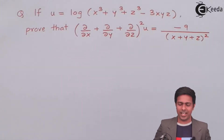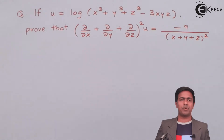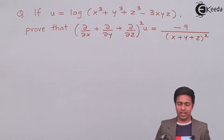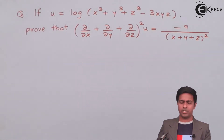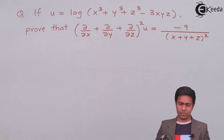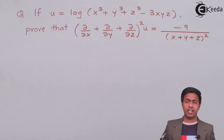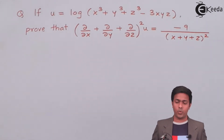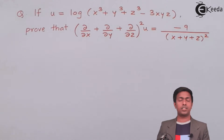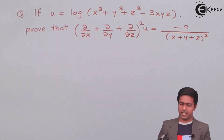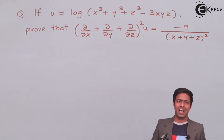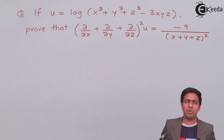The value of u is given as log of (x³ + y³ + z³ − 3xyz). We have to prove that (∂/∂x + ∂/∂y + ∂/∂z)² u — which is generally written as del by del x plus del by del y plus del by del z, the whole square, applied to u — is equal to negative 9 upon (x + y + z)².